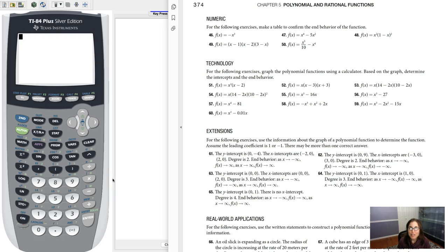Hey Math 31, I had a question on section 5.2, number 57. This problem asks, can you graph this function on your calculator and can you find me some intercepts and some end behavior? So just taking a look at the equation for 57 here, I can see that the y-intercept is 0, negative 81, so I'll keep that in mind.